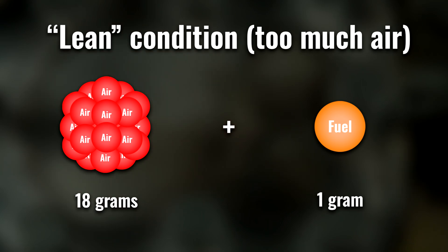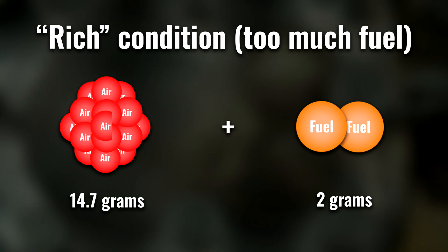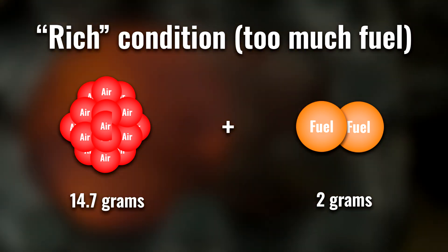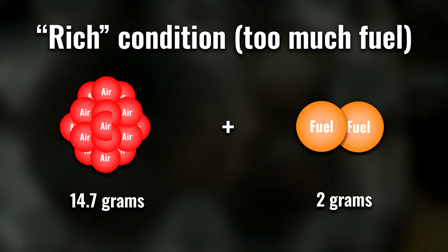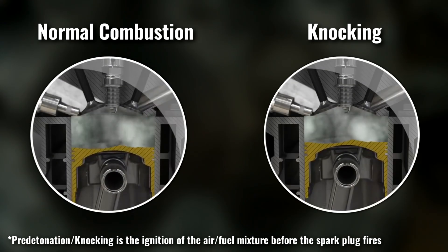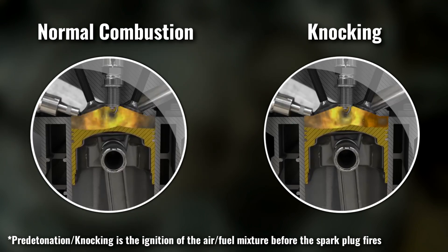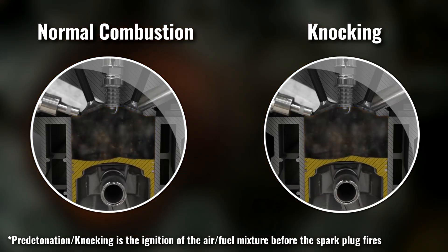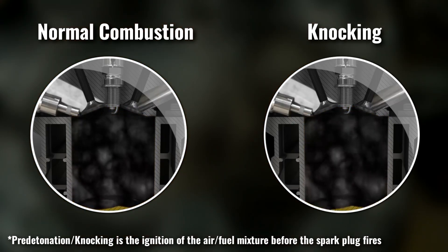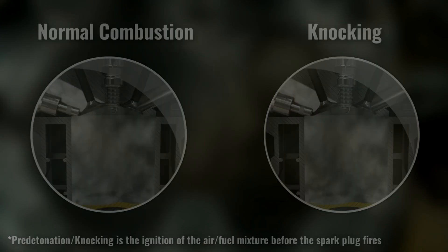When you have too much air, this is what's known as running lean, which may give better fuel economy. If you have too much fuel, this is known as running rich, which may give better performance — both to a certain extent, sometimes with diminishing returns. If the air-fuel ratio isn't right, the engine may be prone to knocking or pre-detonation, which may damage the engine. Of course, there is a balance that must be met, and this is where modern ECUs come in handy.